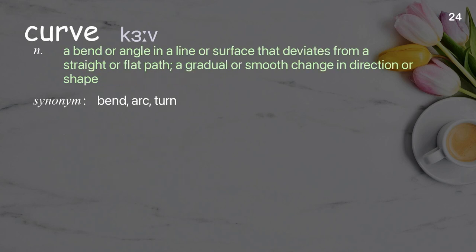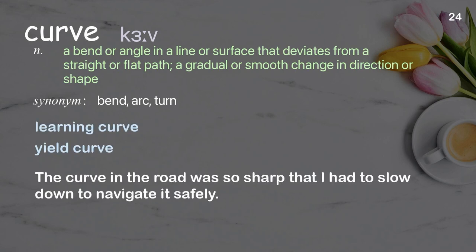Curve: a bend or angle in a line or surface that deviates from a straight or flat path; a gradual or smooth change in direction or shape. Examples: Learning curve. Yield curve. The curve in the road was so sharp that I had to slow down to navigate it safely.